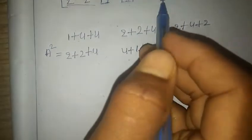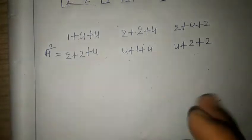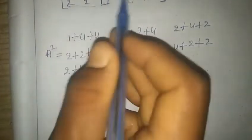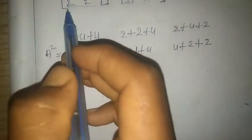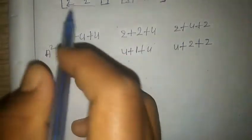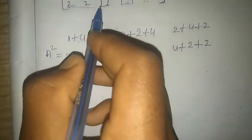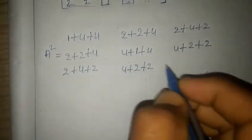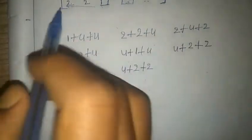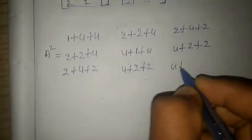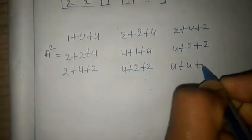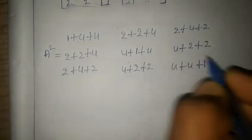For the third row, first column: 2×1 = 2, plus 2×2 = 4, plus 1×2 = 2, giving 8. Third row, second column: 2×2 = 4, plus 2×1 = 2, plus 1×2 = 2, giving 8. Third row, third column: 2×2 = 4, plus 2×2 = 4, plus 1×1 = 1, giving 9.